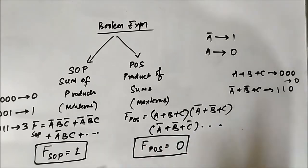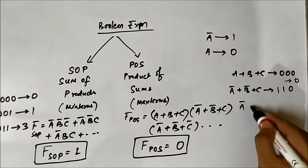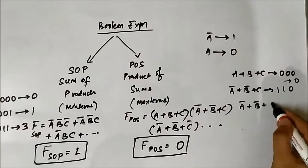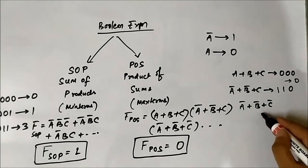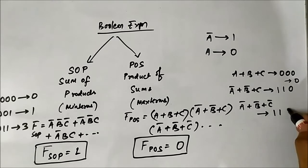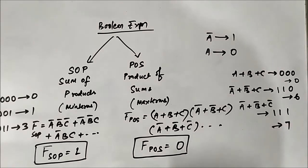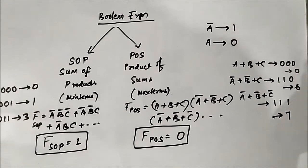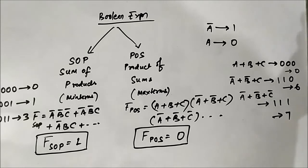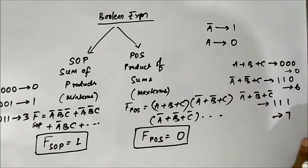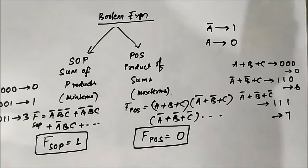Always remember these things. Similarly, A bar or B bar or C bar — that is 1, 1, 1 which is 7. We can go for 4 variables also. No matter how many number of variables, it will follow the same rule. Here we are using 3 variables; similarly we can have 4 variables, 5 variables, and so on. But mostly we will deal with 3 and 4 variable Boolean expressions.